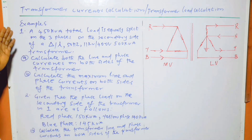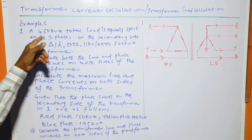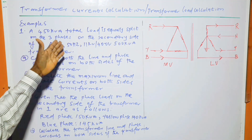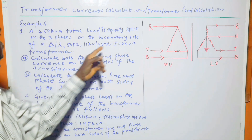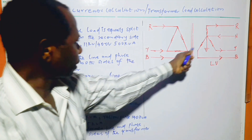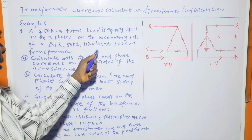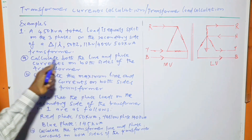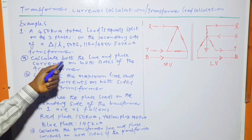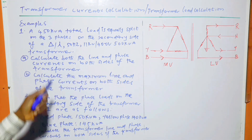Example one: a 450 kVA total load is equally split on the three phases on the secondary side of a delta-star, 11 kV / 400 volt, 500 kVA transformer.